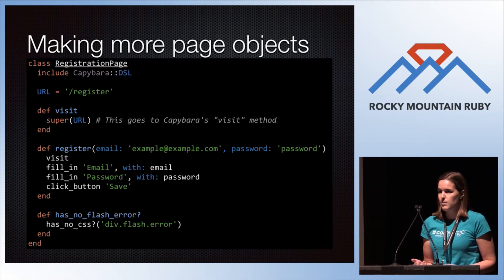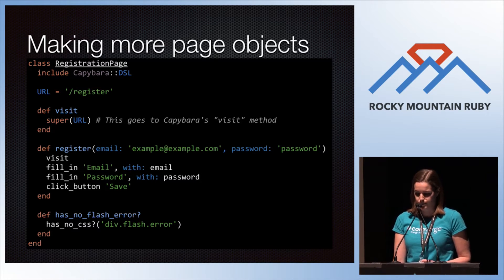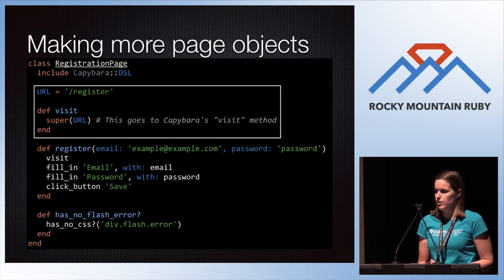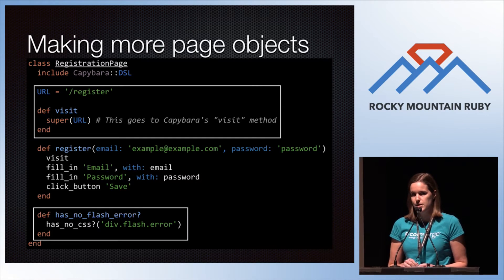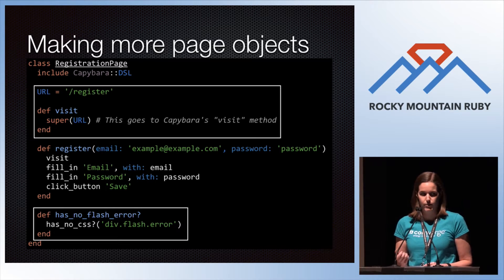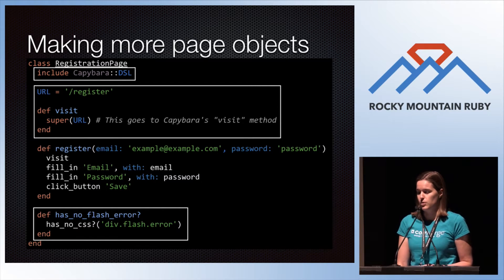Now you might want to make page objects for those other pages as well — the edit profile page, the order history page, or other pages. Let's look at the registration page again and see what might be shared between other pages. This URL saving and visiting Capybara's visit method you'll probably see in all your pages. The has_no_flash_error — you might have the same CSS for any error box that pops up anywhere in your application. And includes Capybara DSL, also useful in most of your pages.